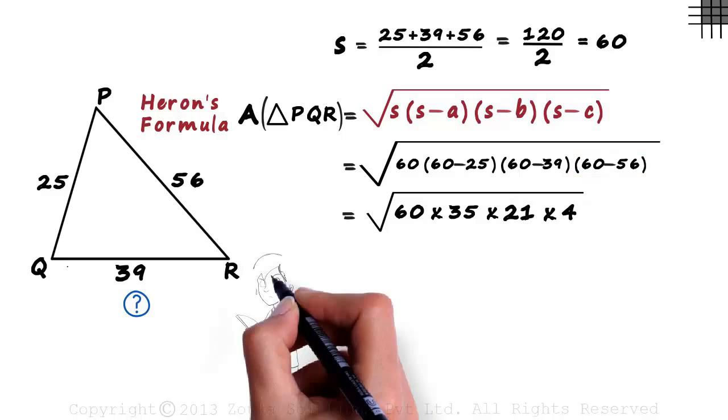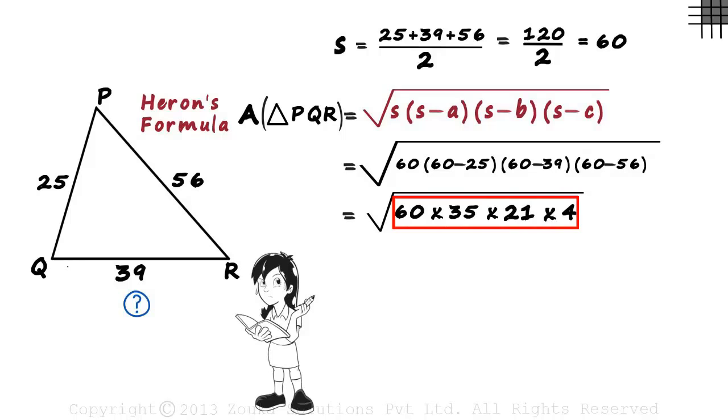Think about the product of these numbers. It will be massive. The worst thing you could do here is multiply these numbers to find the product. In our videos based on square roots, we had seen that if the number is big, we should use the prime factorization method to find the square root. And to use the prime factorization method, we have to reduce all the numbers to their prime factors.